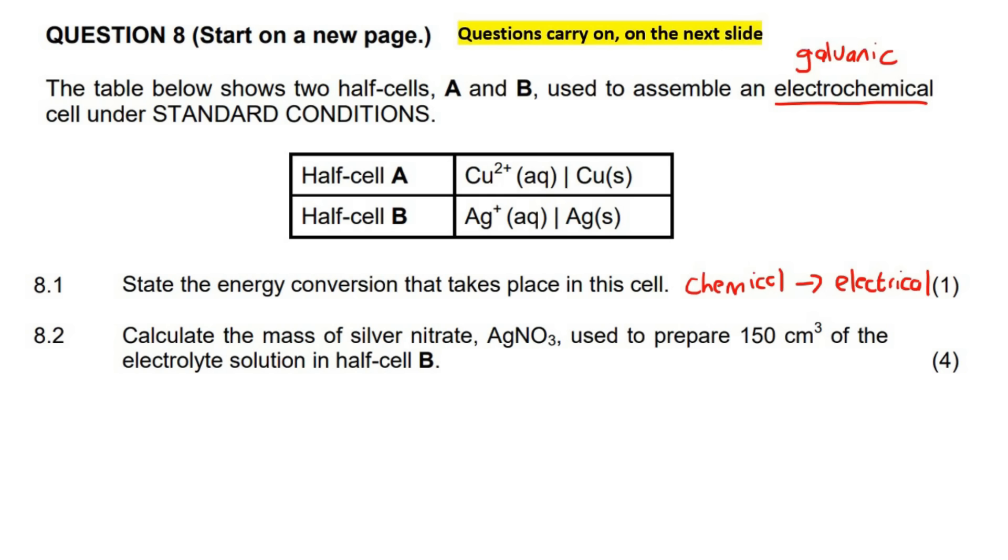This is a very interesting one. Calculate the mass of silver nitrate used to prepare 150 centimeters cubed of the electrolyte solution in half cell B. Now, I can guarantee you that a lot of learners who would have written this exam or test, they would have looked at this and been like, Dude, seriously, we only have the volume. We don't have any other information.